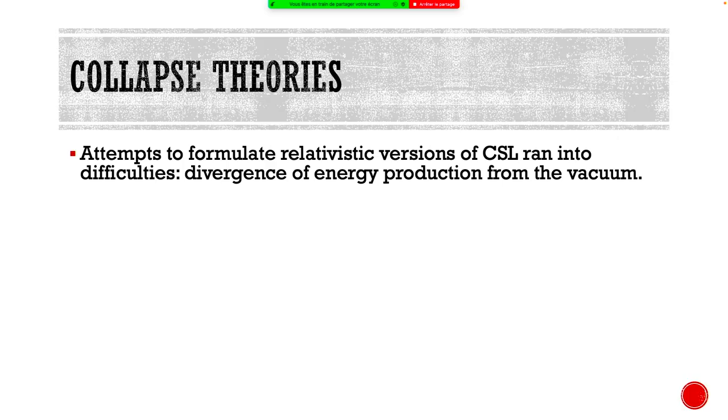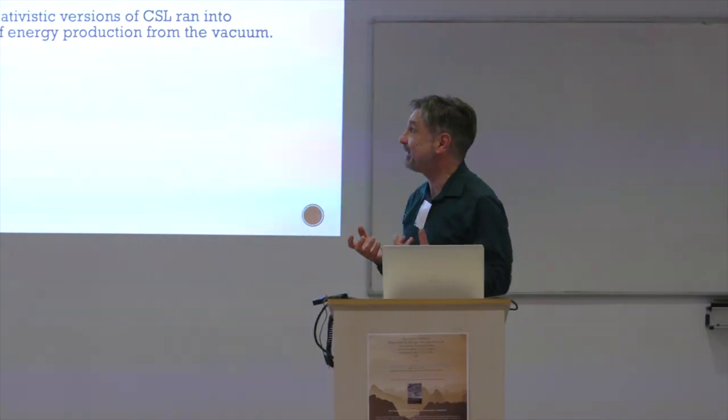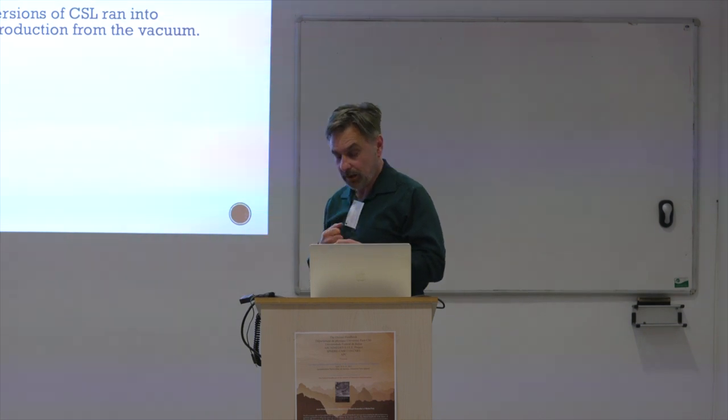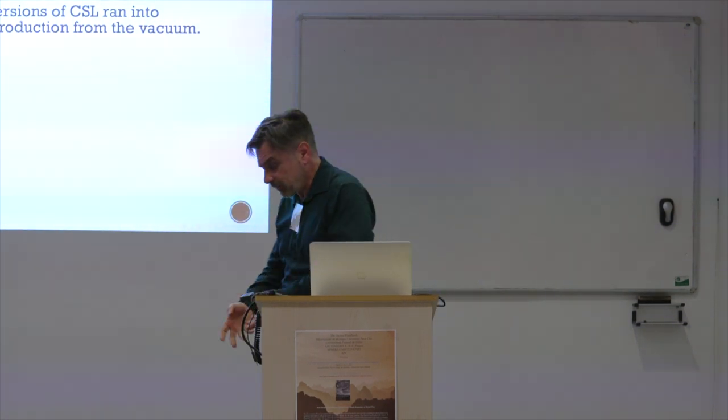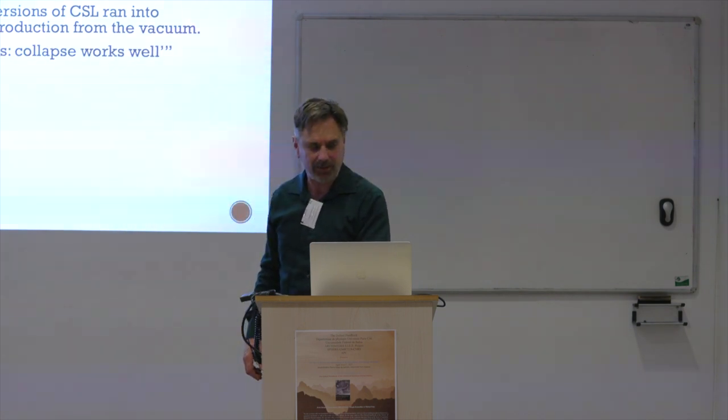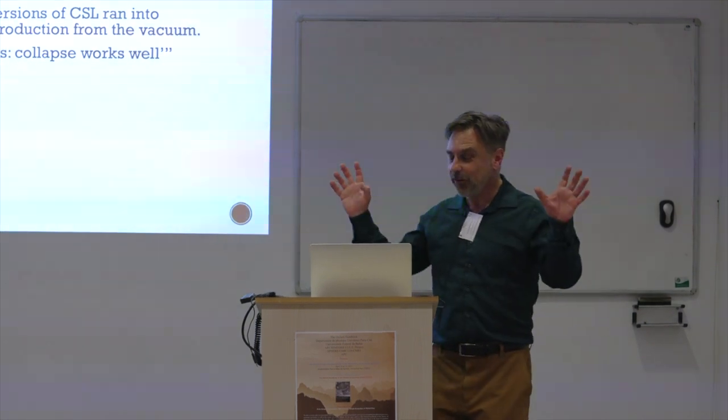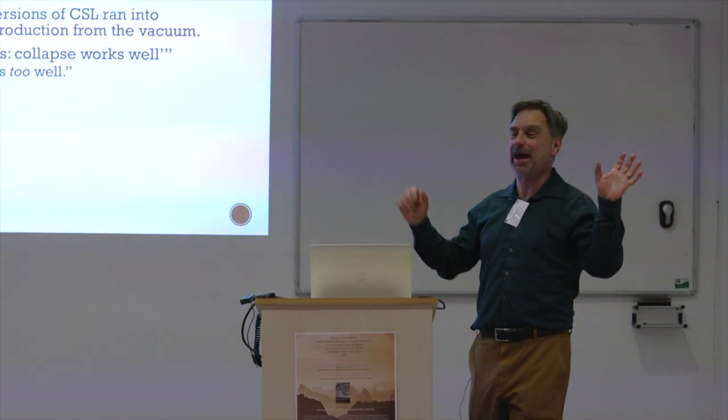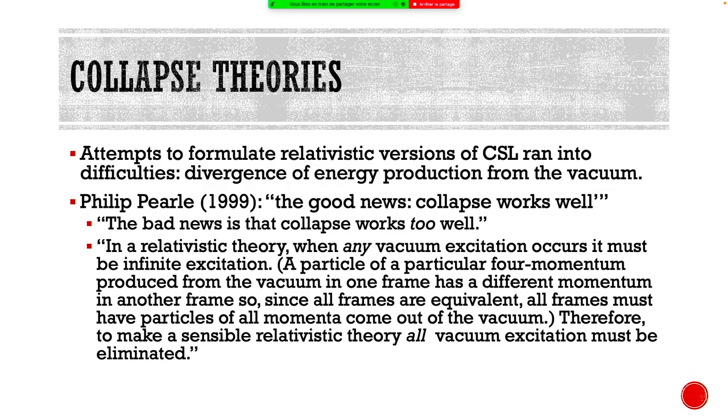So what problems did they have? Well this is something that Bell was interested in the last few years of his life. When people try to adapt CSL to relativistic theories, what they had was divergence of energy production from the vacuum. So Philip Pearle in a survey said good news is collapse works well, bad news is collapse works too well. And there's an argument that that's unavoidable. This is from Pearle. Basically the idea is that if you've got a certain probability for a certain excitation from the vacuum, you have to have, if you have Lorentz invariance, you have to have the same probability for it, for every boost of that excitation. And there's just no way to keep that finite.